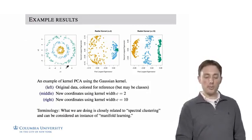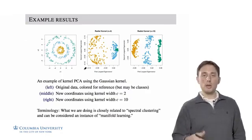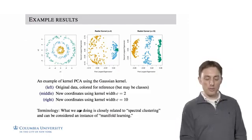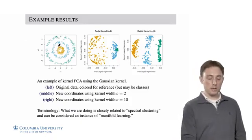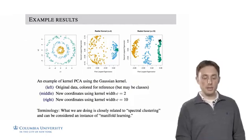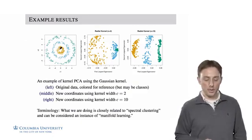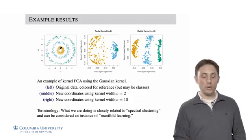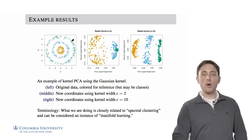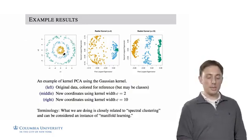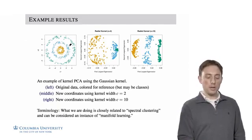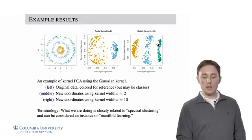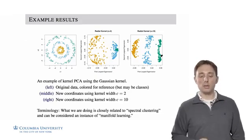This is closely related to something called spectral clustering, where clustering in the original space isn't as good as clustering in the projected space — for example, to separate the rings. It's also an example of manifold learning, where we want to unwrap a manifold so that Euclidean distance in the projected space becomes more useful. K-means clustering with three clusters in the original space would not learn the three rings, but K-means clustering in the projected space would separate these three parts.